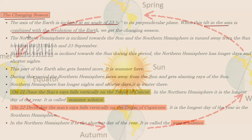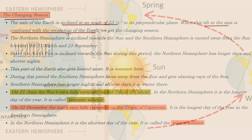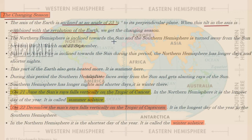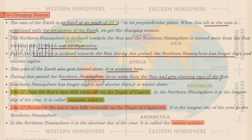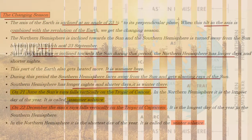When this tilted axis is combined with the revolution of the earth, we get seasonal changes. From 21 March to 23 September, the Northern Pole is inclined towards the sun, so the Northern Hemisphere has longer days, shorter nights, receives more heat, and experiences summer. The Southern Hemisphere is away from the sun, receives only slanting rays, has longer nights and shorter days, and experiences winter. On 21st June, sun rays fall on the Tropic of Cancer — this is the longest day of the year, known as the summer solstice.